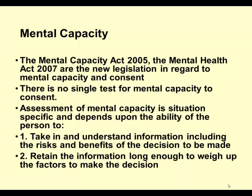Can they retain the information long enough to weigh up the factors and make a decision? Can they take it in, process it, and make sense of it? You would say to the client, 'What have I asked you to do or take part in?' If they are unable to give that back to you, they don't have capacity. A person with dementia may not remember from the beginning of the session to the end. Psychosis, drugs, alcohol, extreme distress, and dissociation can all impair capacity to process information.